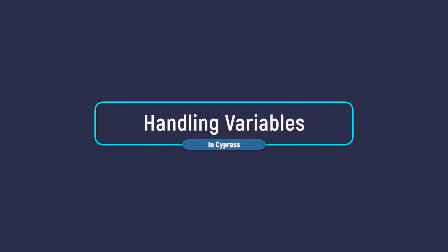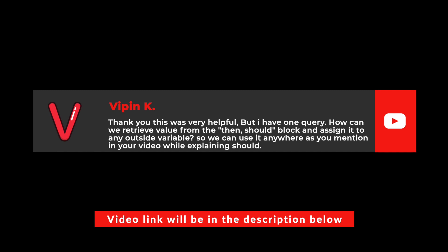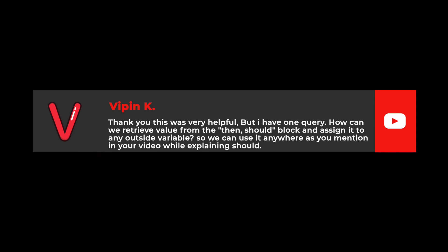Hey, how's it going guys? In this video I'm going to answer a comment I got in one of my Cypress videos on handling variables in Cypress. The comment says: 'Thank you, this was very helpful, but I have one query — how can we retrieve a value from the .then or .should block and assign it to an outside variable so we can use it anywhere?' This is a really good question because it's one of those things people get confused about when using Cypress.